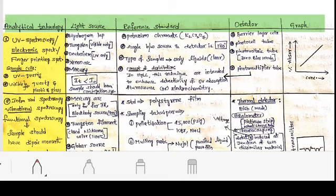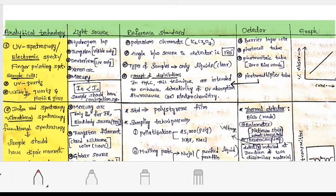UV spectroscopy is also called fingerprint spectroscopy because it is used for the identification of a molecule. Don't confuse this fingerprint spectroscopy with the fingerprint region in IR spectroscopy.